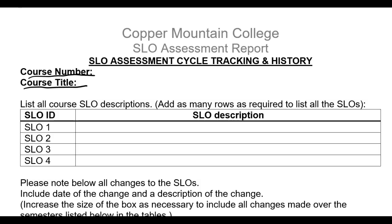You're going to list all the SLOs for that course that are on the course outline of record. There's a chance you'll have more than four SLOs, so you would add more rows here. If you had seven SLOs, you'd have seven rows. The numbering should match — the numbers on the course outline of record should also match here.